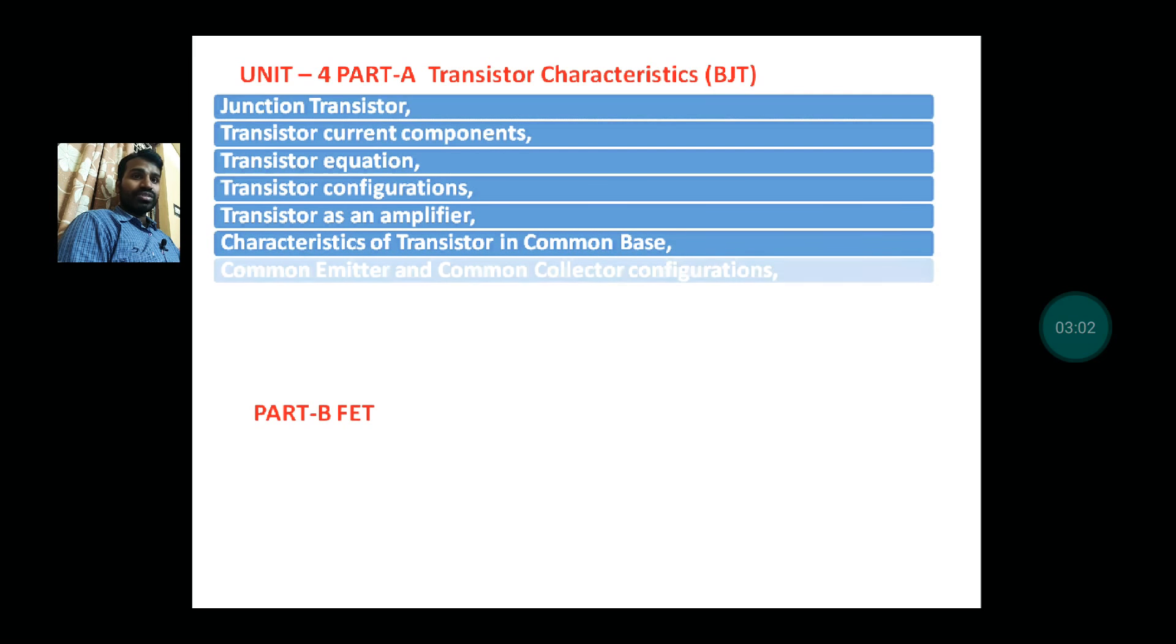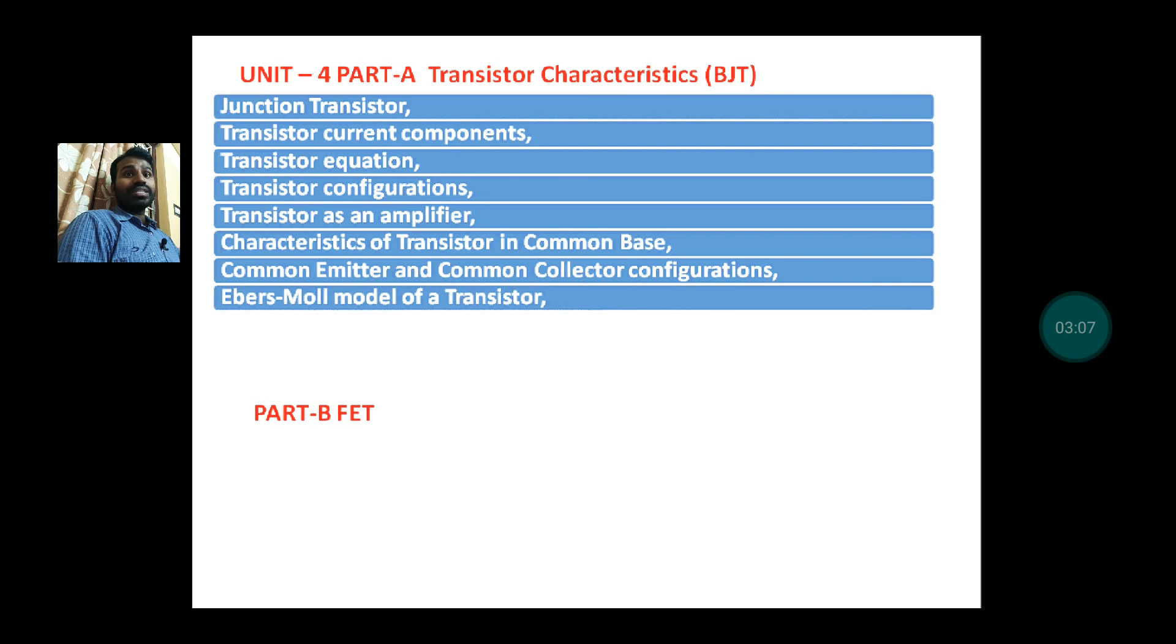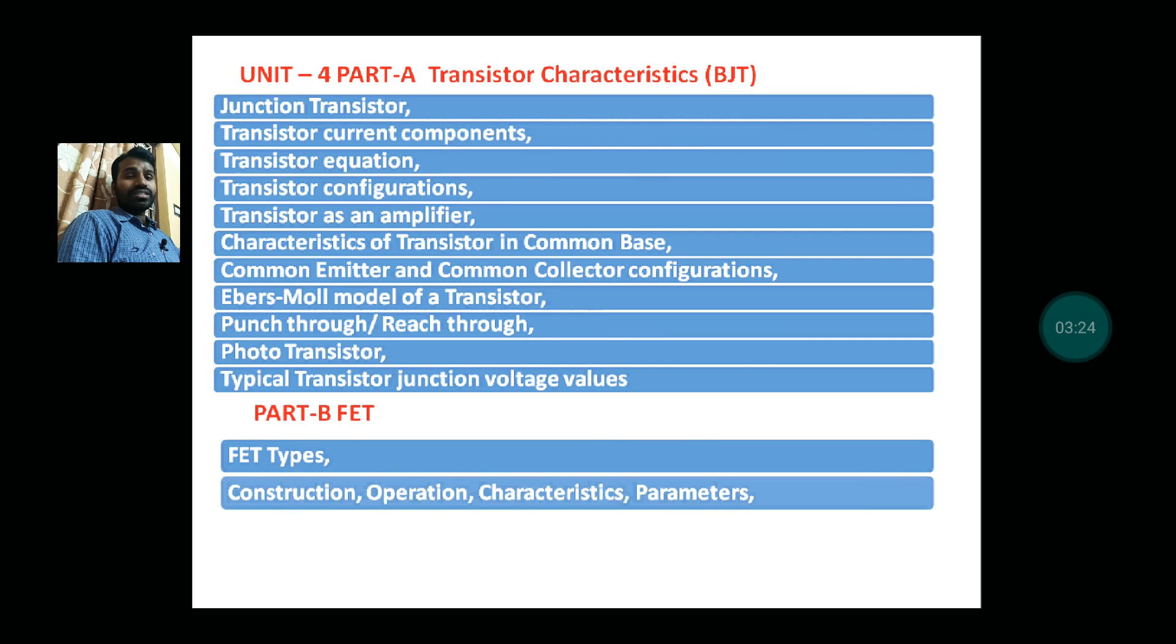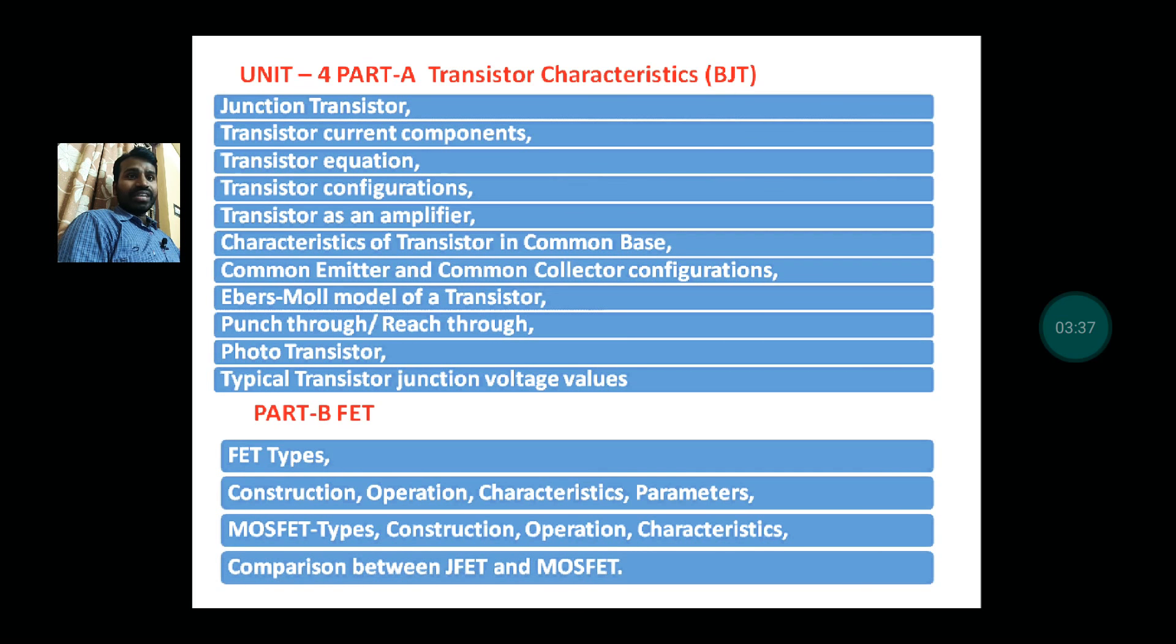Ebers-Moll model of transistor—very important. Punch-through, reach-through—one more topic. Phototransistor, typical transistor junction voltage values. In Part B, FET types, construction, operation, characteristics, parameters, comparison between JFET and MOSFET.